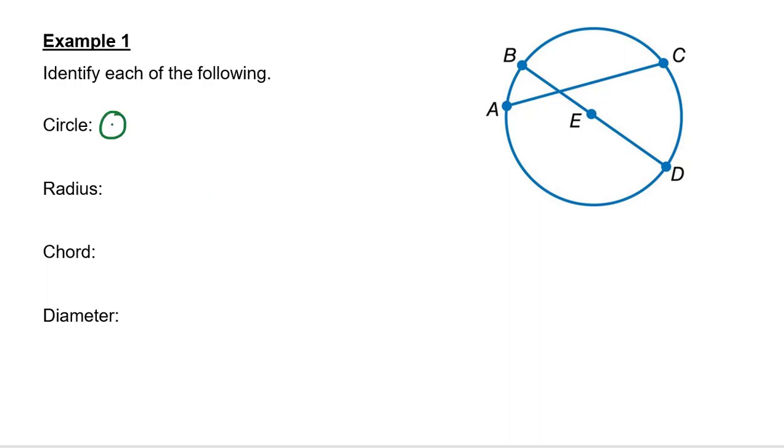So the circle. We have circle E. The center has a little dot. A radius. A couple answers for that. You could have segment ED. A chord doesn't go through the center. So that is segment AC. And then a diameter is segment BD.